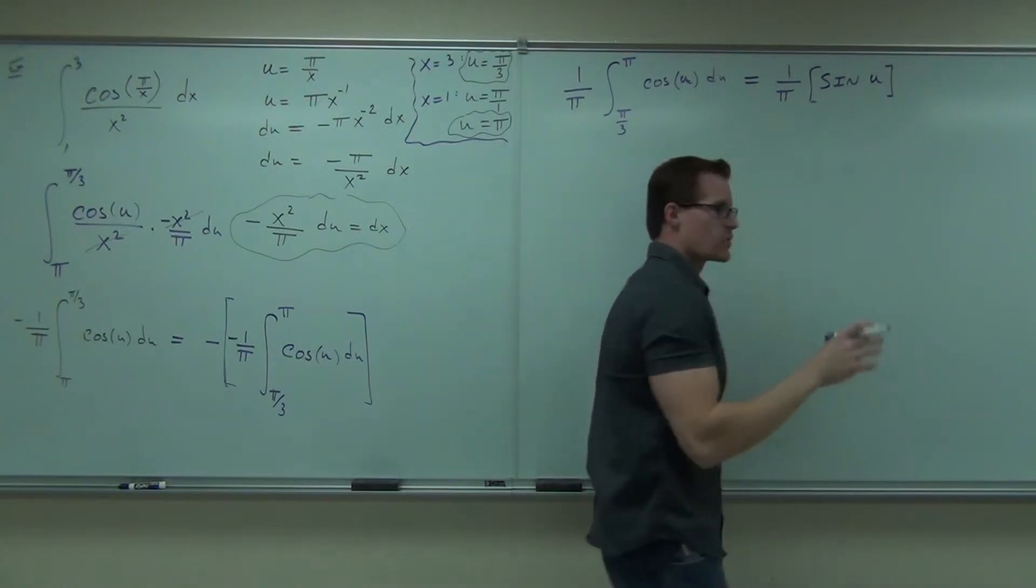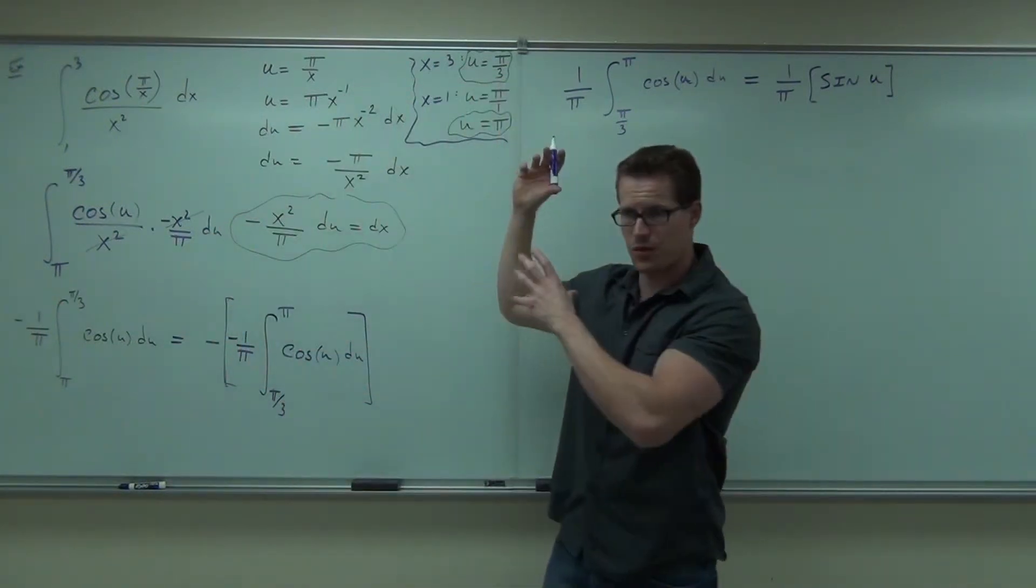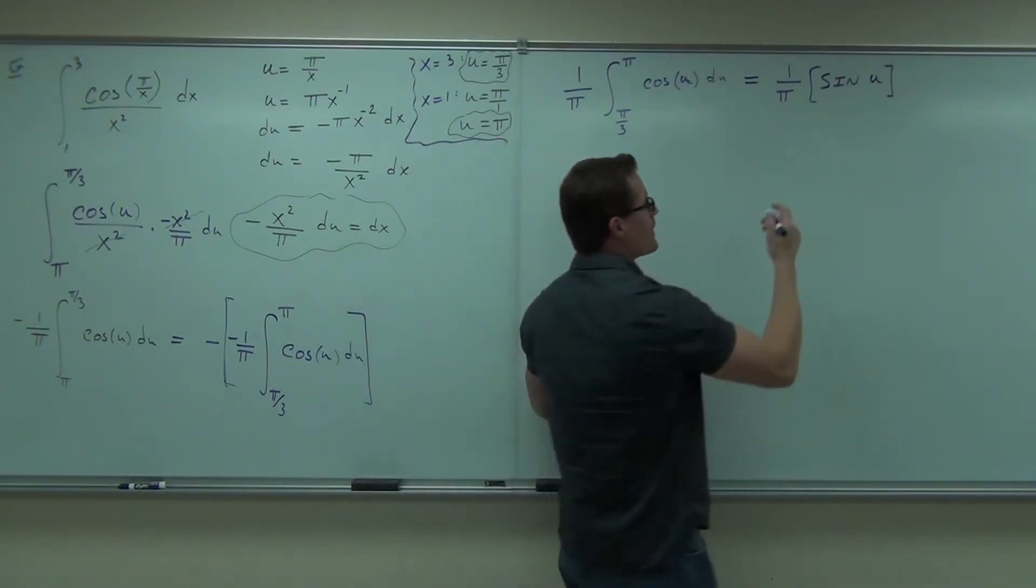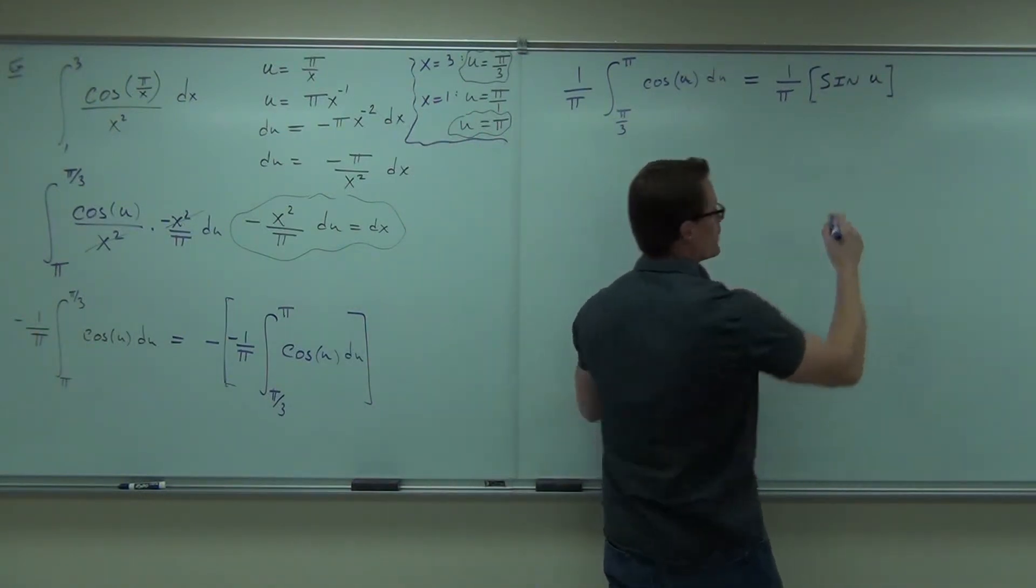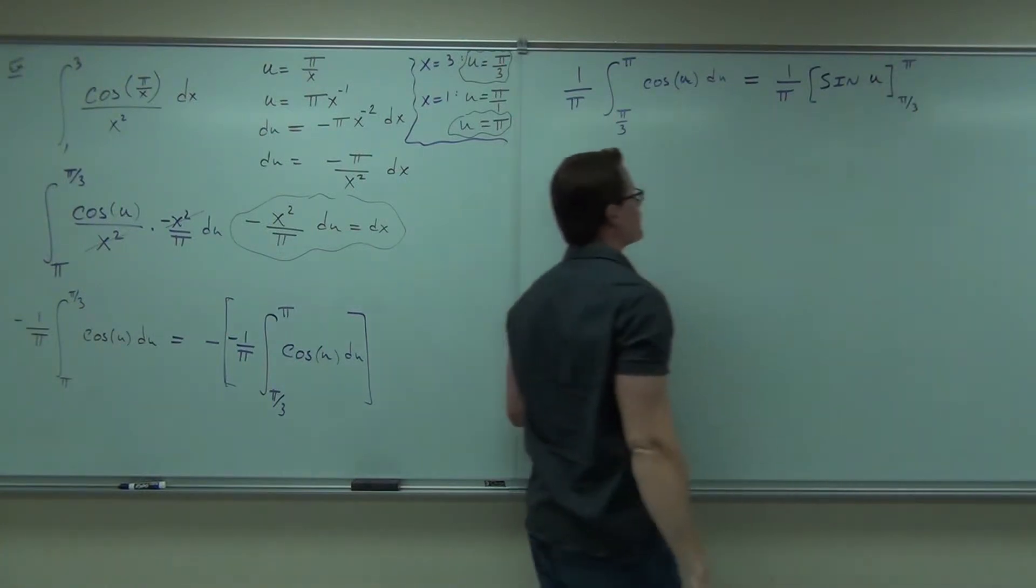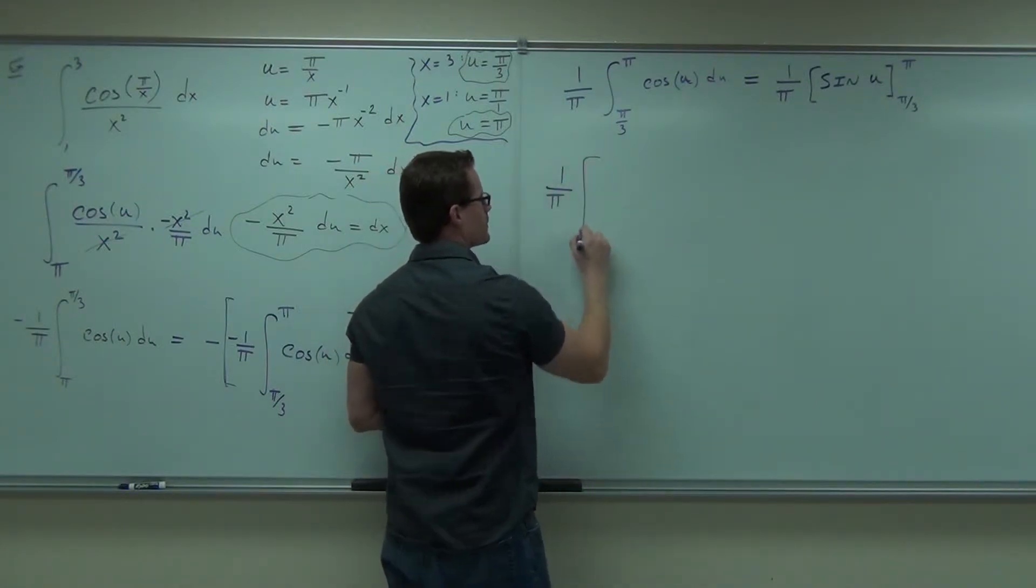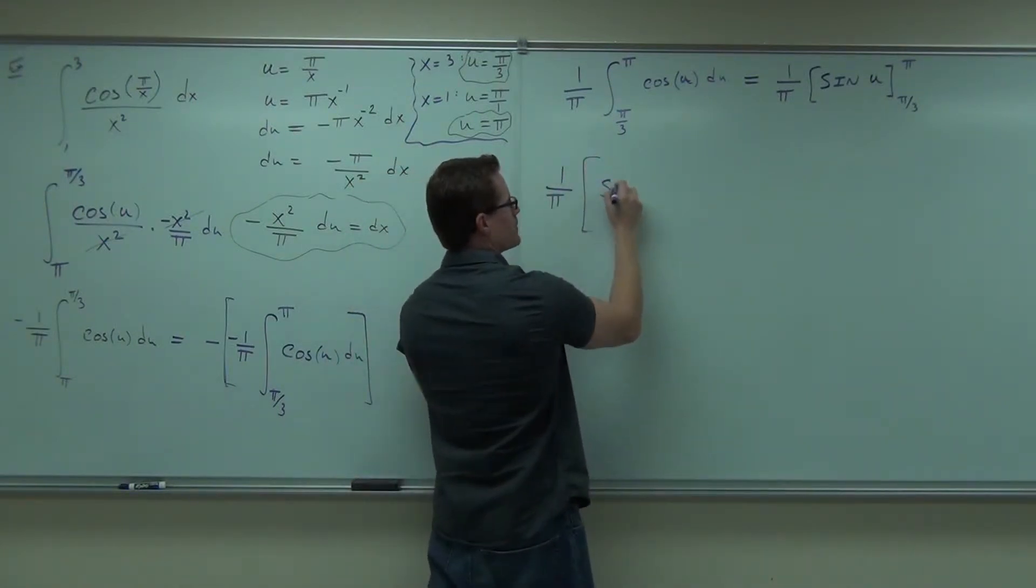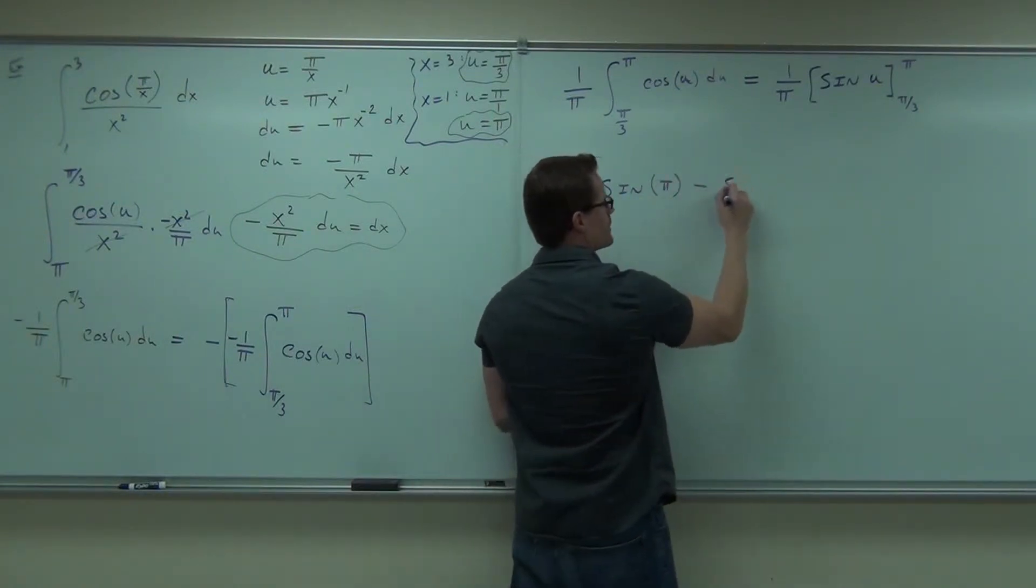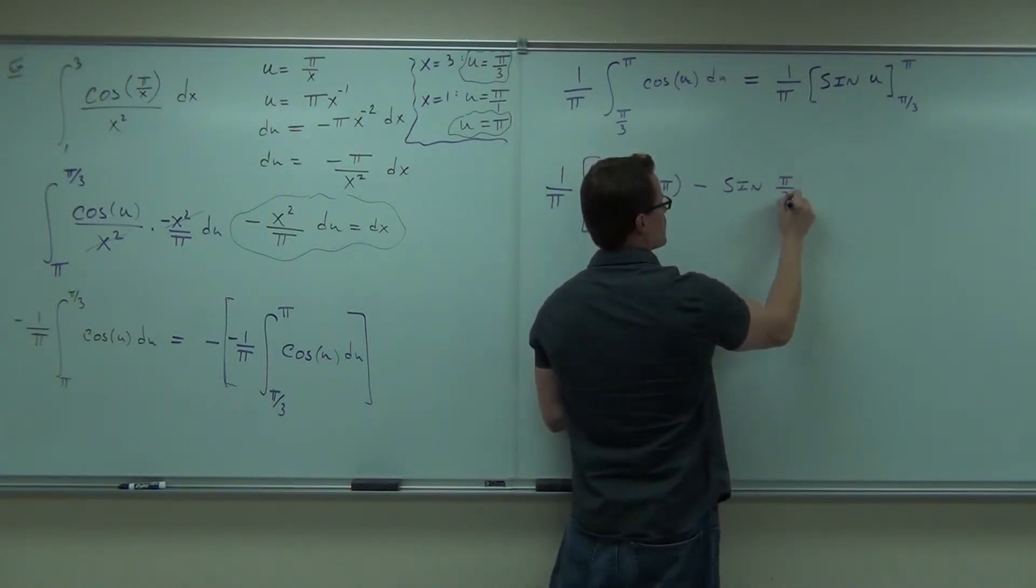No plugging in back for x's. We already changed our bounds. That's great. So we don't have to do this whole re-substitution thing. We've changed our bounds off the side. We were already in terms of u. That just means from right here, let's evaluate it. So we'll do 1 over π. That's going to be out in front. Inside we'll have sine π minus sine π/3.